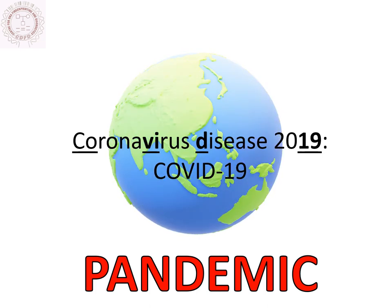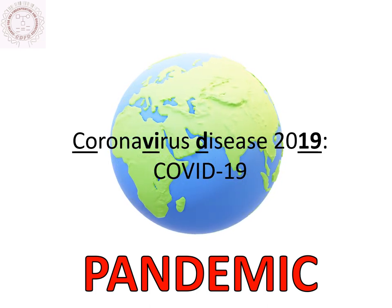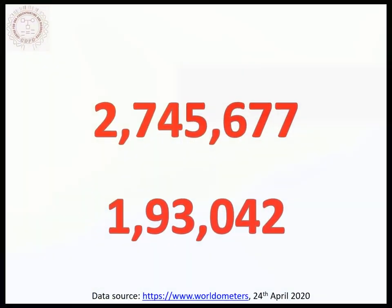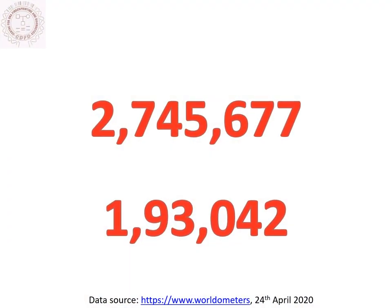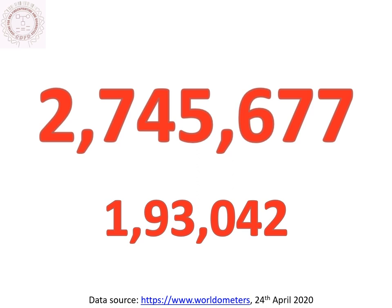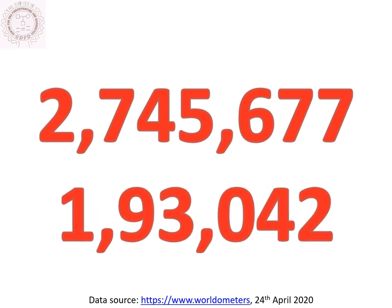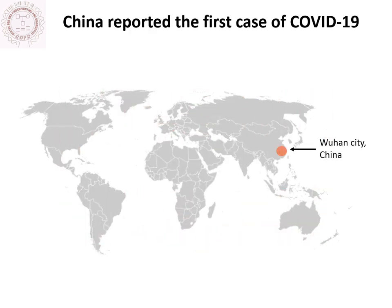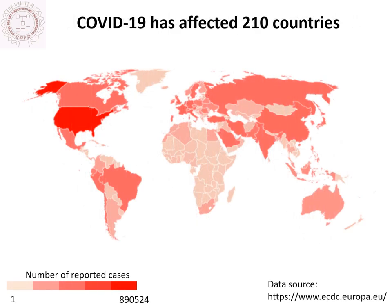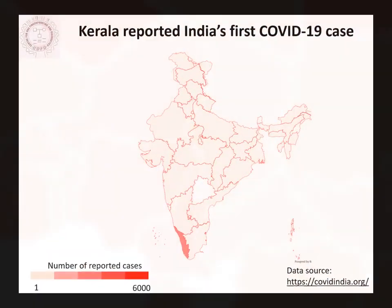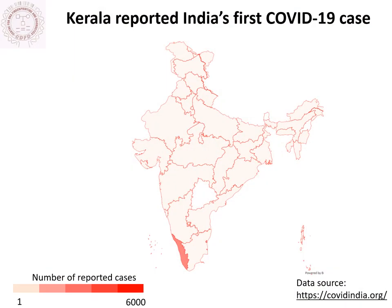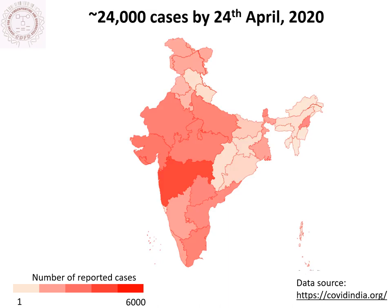COVID-19 has been declared a pandemic by the World Health Organization. Across the globe, COVID-19 has claimed more than 25 million casualties and 1.9 million deaths. After the first reported case in Wuhan city of China, the disease spread across the globe affecting more than 200 countries. On 30th January, Kerala reported India's first COVID-19 case, and by April 24th, more than 24,000 cases had been reported nationwide.